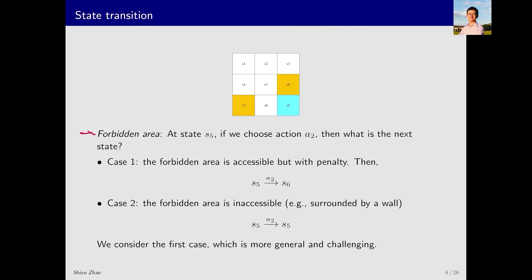Next, let's examine the forbidden area more closely. Suppose we are in S5 and take action A2, which is moving right. What would be the next state? There are two cases. The first case is that although the forbidden area is forbidden to enter, it is still accessible, but entering it results in a punishment. So, if I'm in S5 and take action A2, the next state would be S6, meaning I've entered the forbidden area. The second case is that the forbidden area is physically inaccessible, just like being surrounded by walls, making it impossible to enter. In this case, if I'm in S5 and take action A2, I would bounce back to S5. In our course, we consider the first case where the forbidden area is accessible but incurs a punishment.